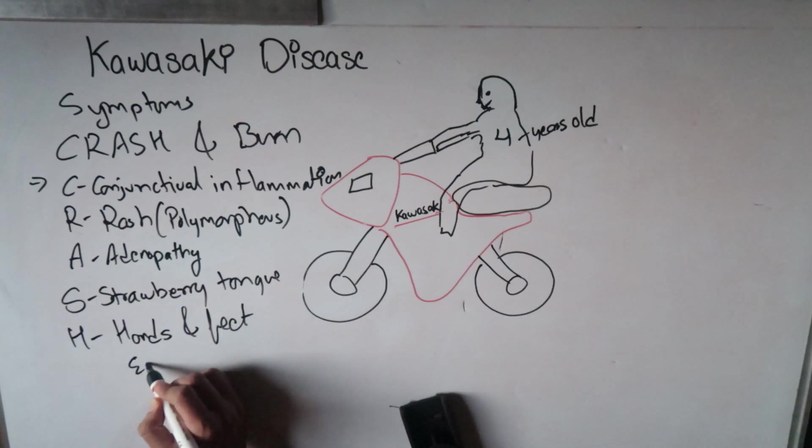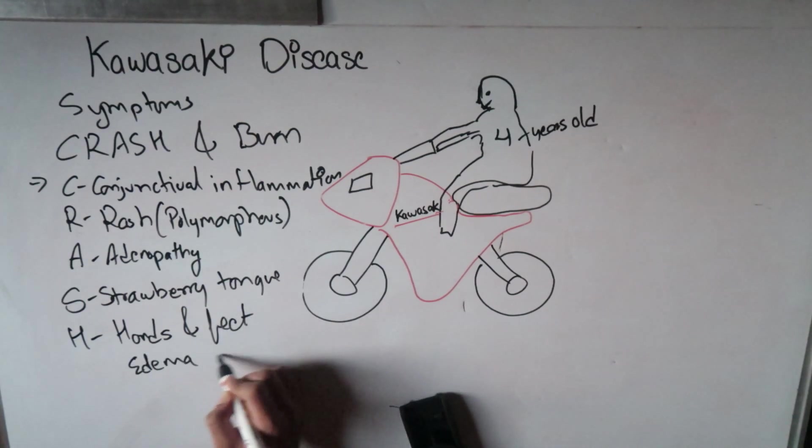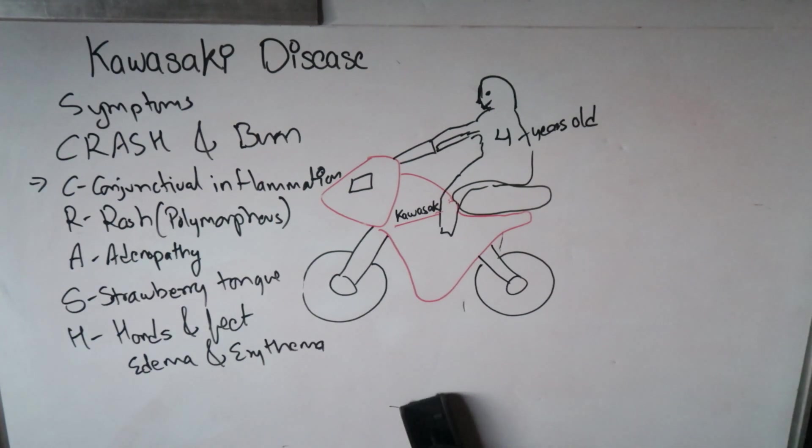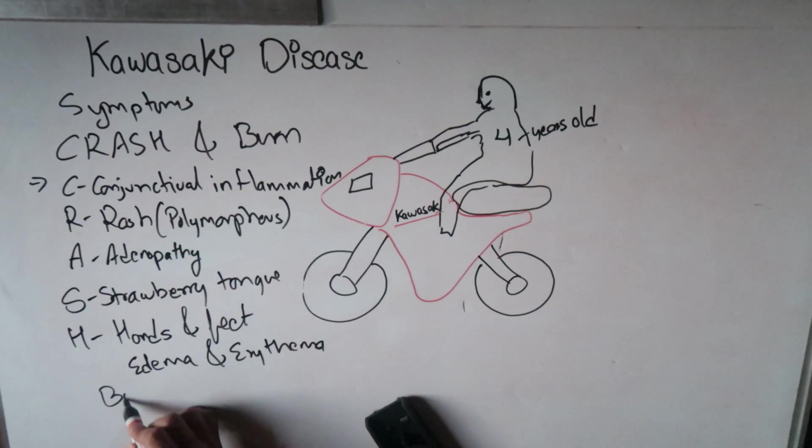Finally, H means hand and feet edema and erythema. There will be edema and erythema of hands and feet. And BURN obviously refers to fever. The fever will not subside even if we take antipyretics. These are the symptoms of Kawasaki disease.